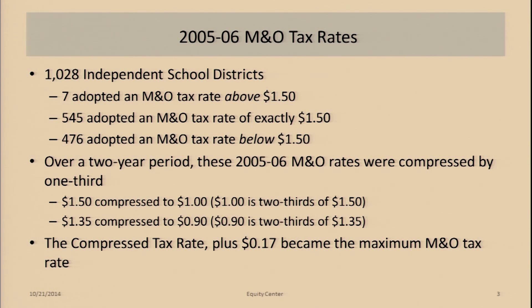$1.50 is what we think of as the maximum M&O tax rate at that time. But there was a special circumstance in Harris County where, 60 years ago, districts got voter approval to set tax rates up to $2.00. So instead of having $1.50 for M&O and another $0.50 for I&S, they had $2.00 to use any way they chose. Six districts from Harris County were above $1.50.